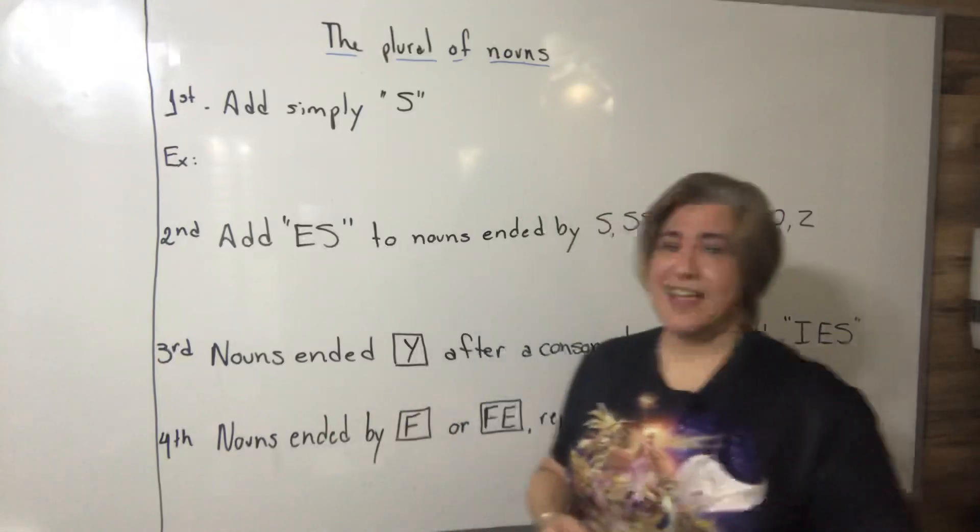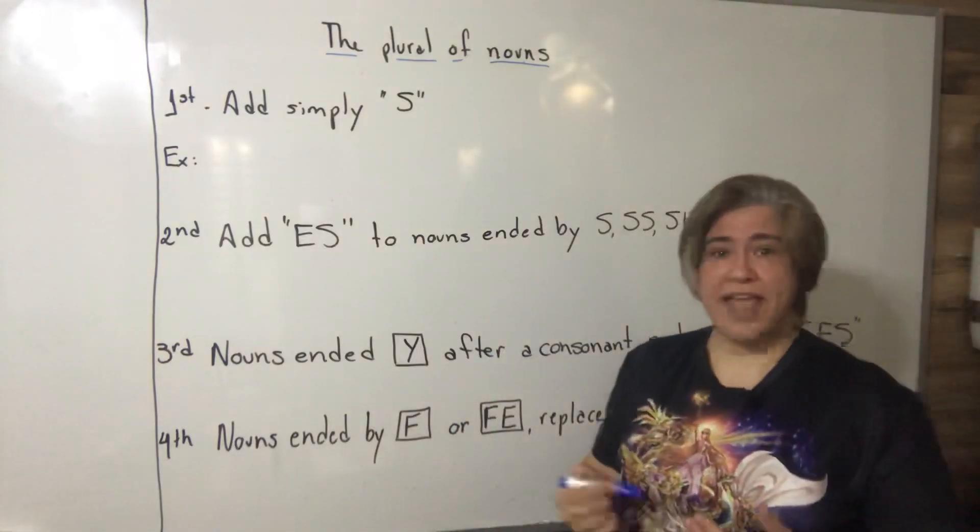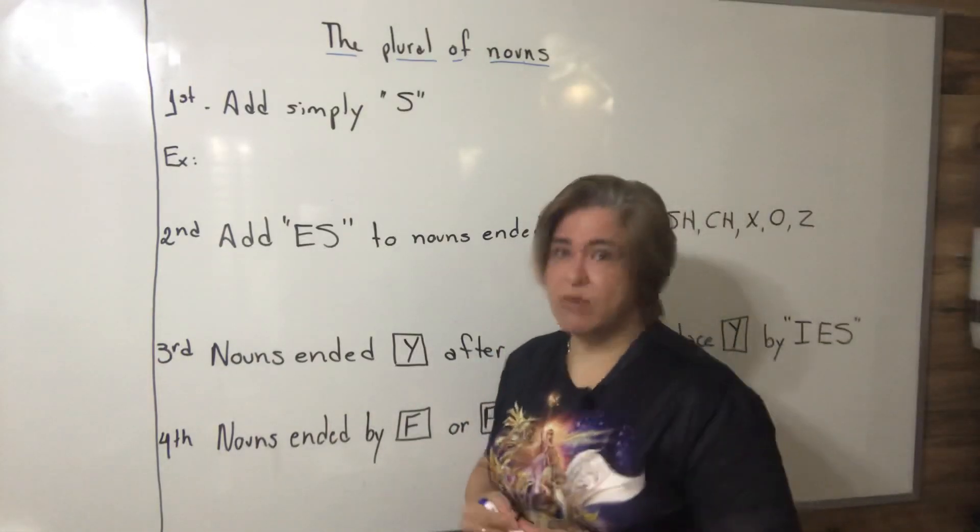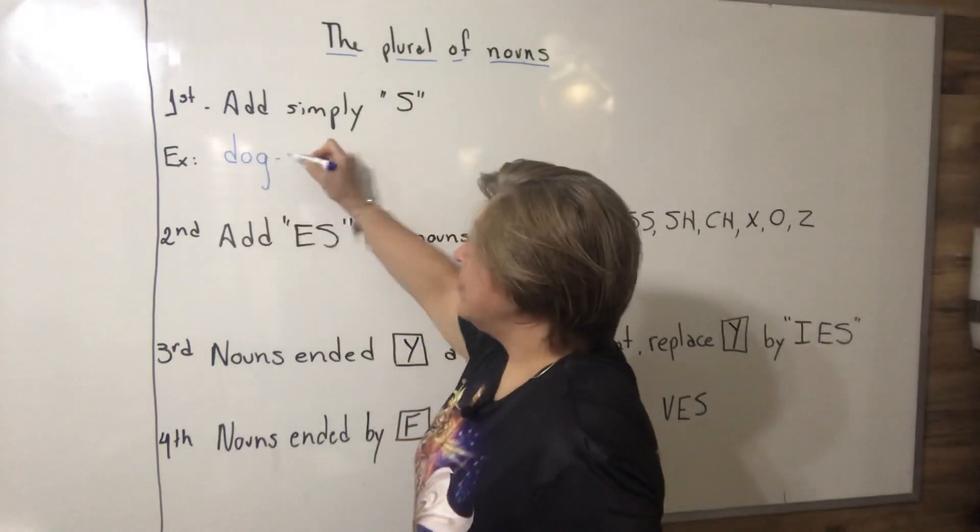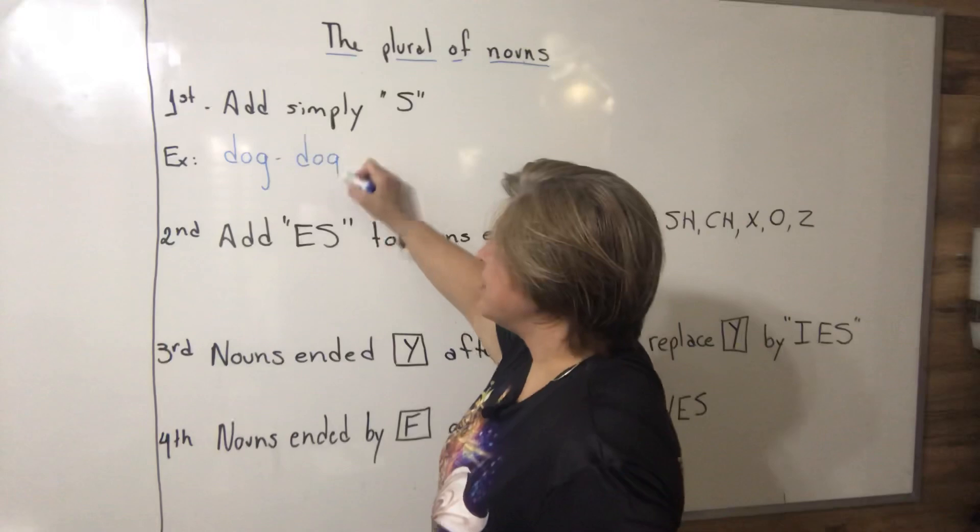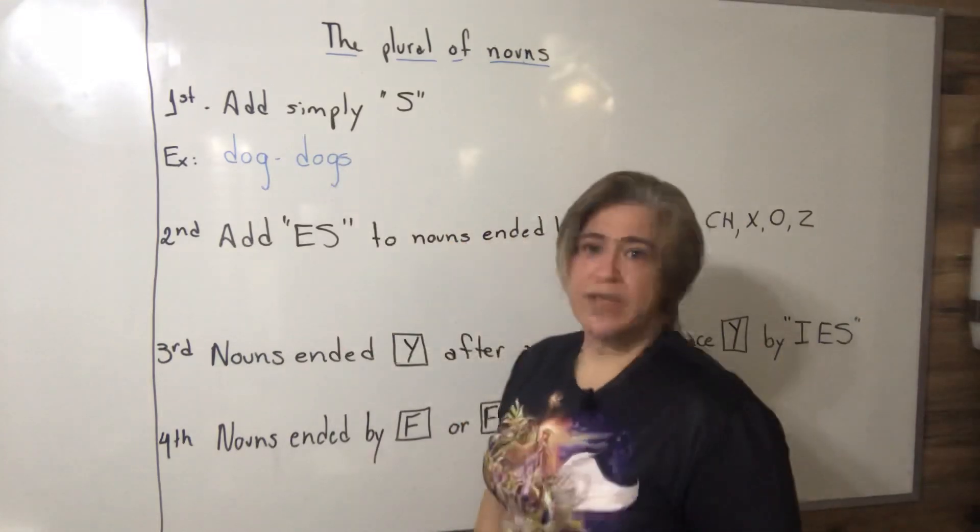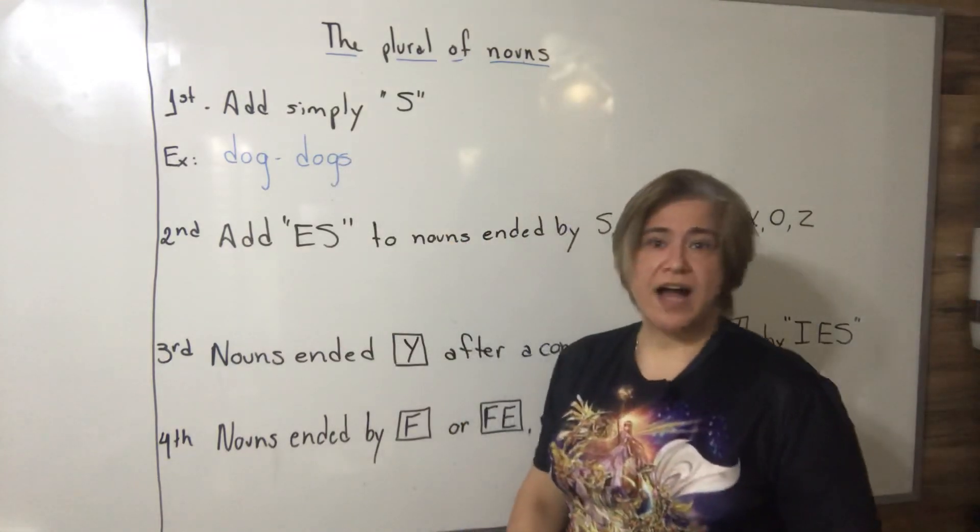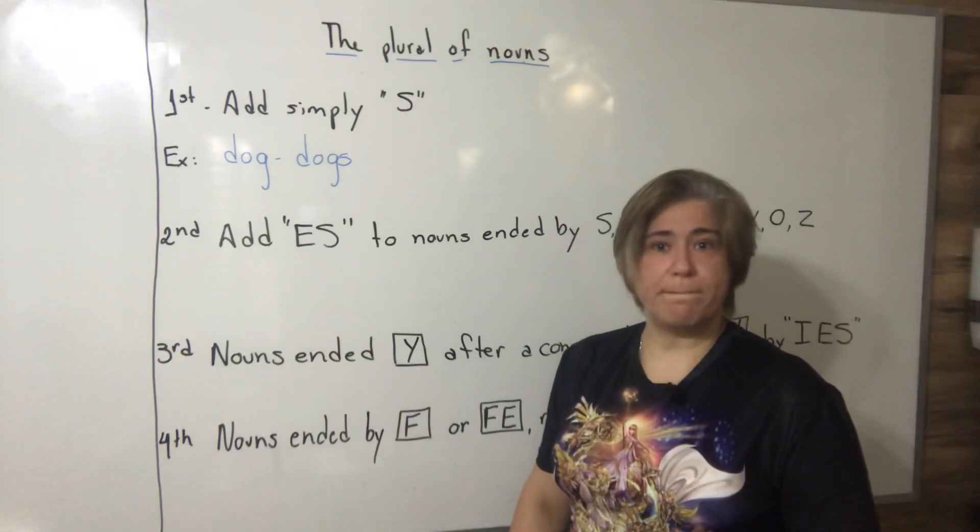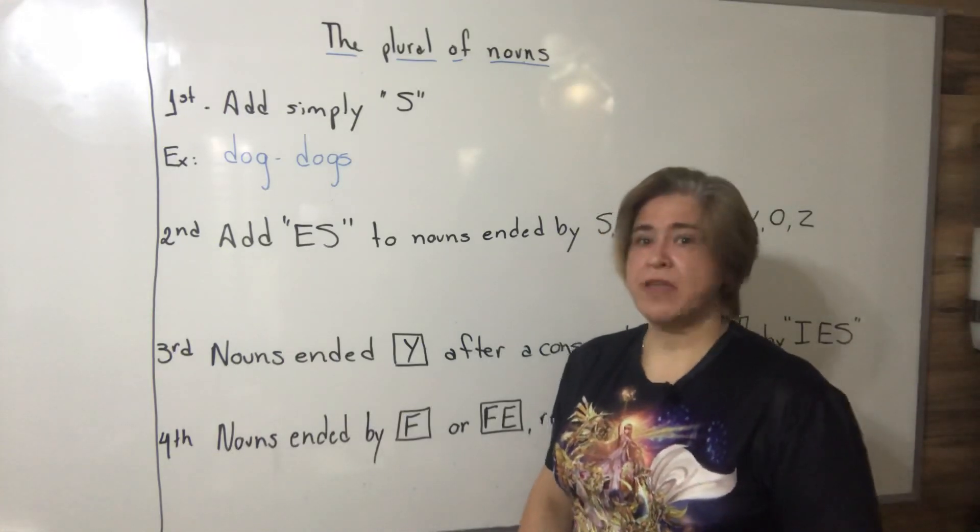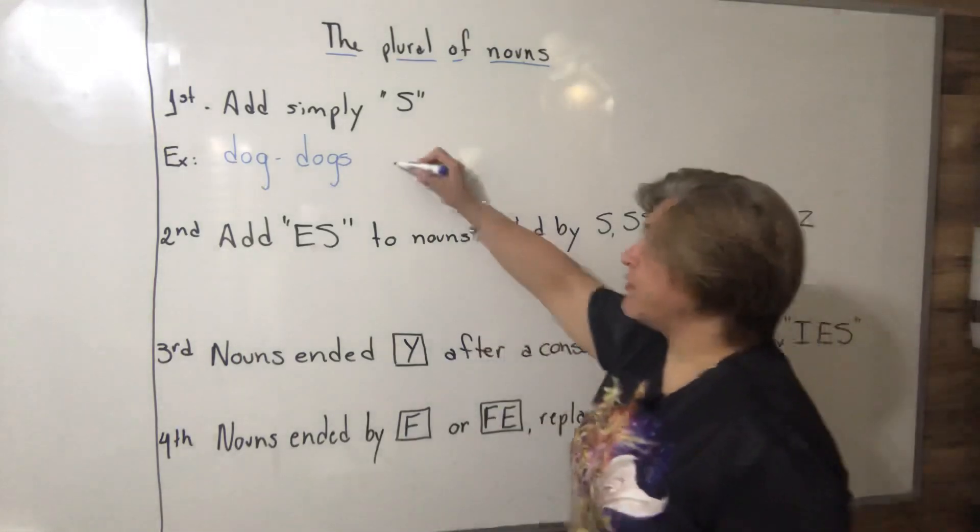The first rule says add simply S to indicate plural. For example, if I have dog, of course the plural is dogs. The dogs are waiting for their master.